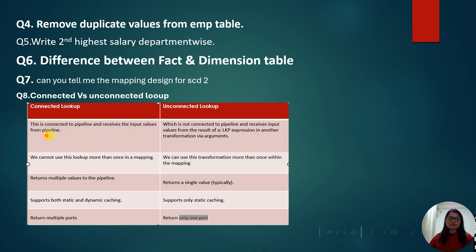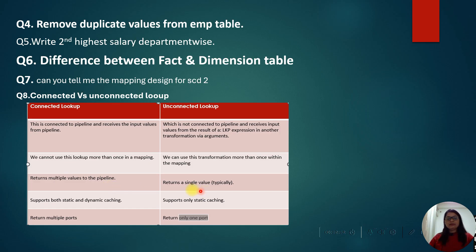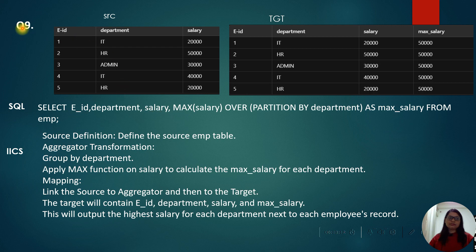The next question is: connected versus unconnected lookup. A connected lookup is connected to the pipeline and receives input values from the pipeline. An unconnected lookup is not connected to any other transformation, and its lookup expression is invoked via an argument. A connected lookup cannot be used more than once in a mapping, but an unconnected lookup can be used more than once within a mapping. A connected lookup returns multiple values to the mapping pipeline, while an unconnected lookup returns a single value. Connected lookup supports both static and dynamic caching, while unconnected lookup supports only static caching. Connected returns multiple ports; unconnected returns only one port.